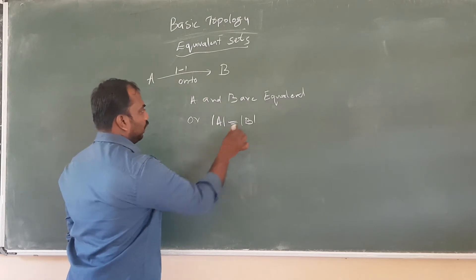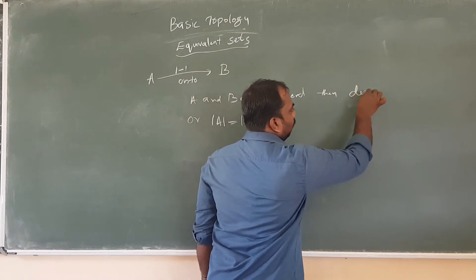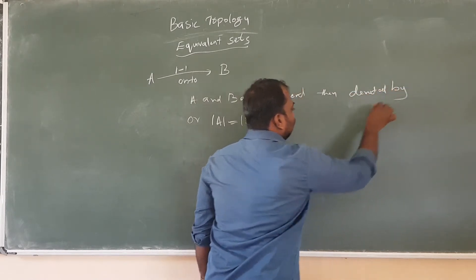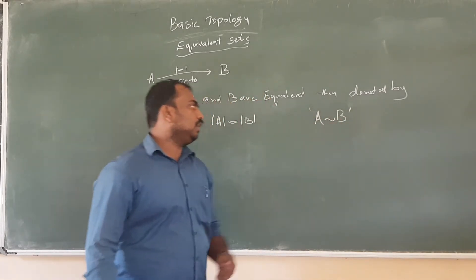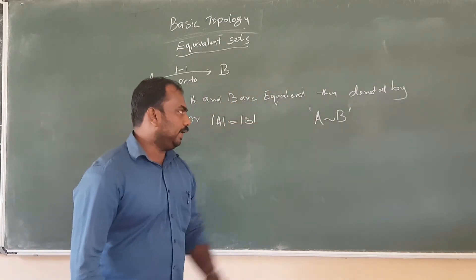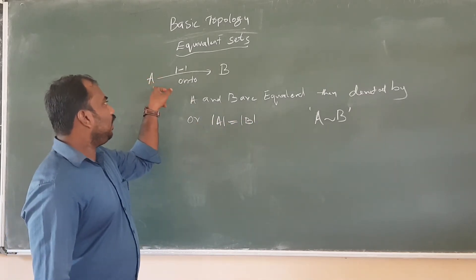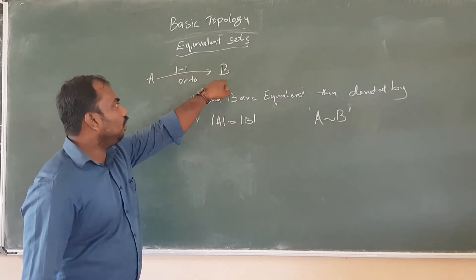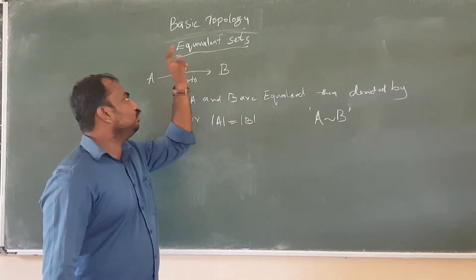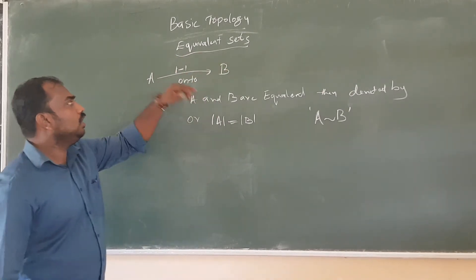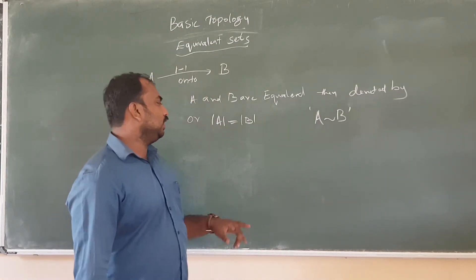If A and B are equivalent, it is denoted by A is equivalent to B. So, A is equivalent to B implies A and B are equivalent, or cardinality of A equals cardinality of B, or A has a one-to-one correspondence onto B, or A has a mapping which is one-one and onto B.